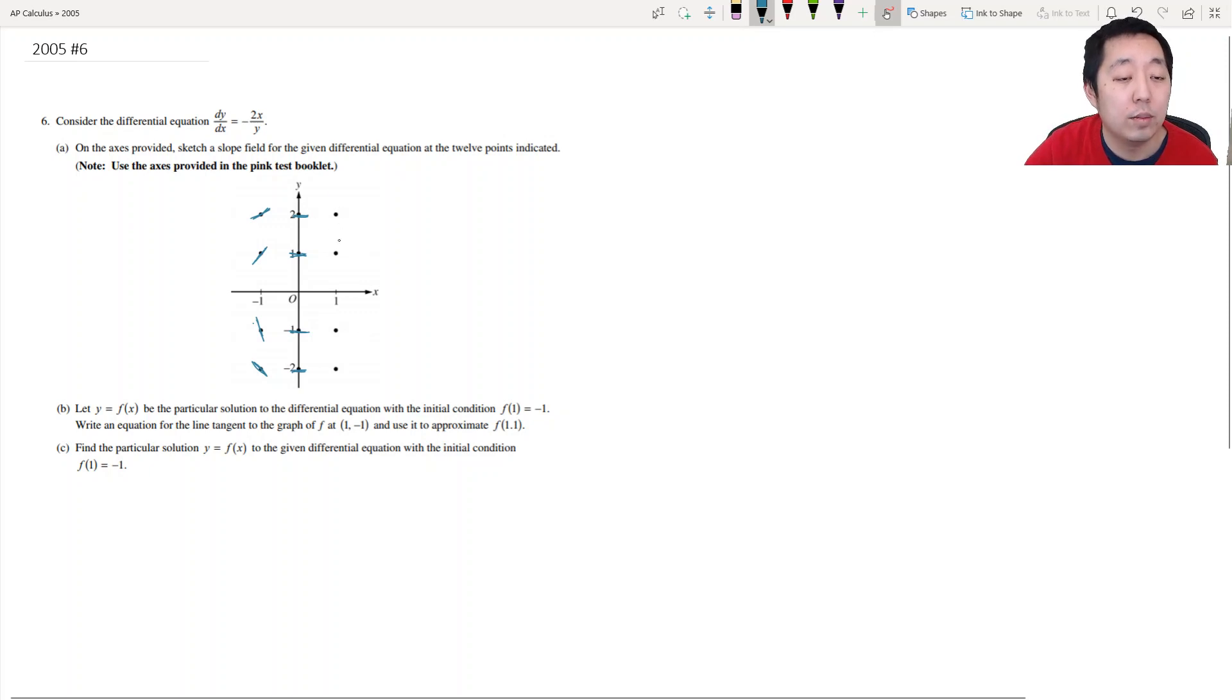And then over here when x and y are both positive this whole thing is negative. So then this would be negative 2, negative 1. Now I have that backwards. I was going to say this is negative 1, this is negative 2. And then we change signs again because now y is negative so it becomes positive 2 and positive 1. Okay so something like that. Looks kind of circular.